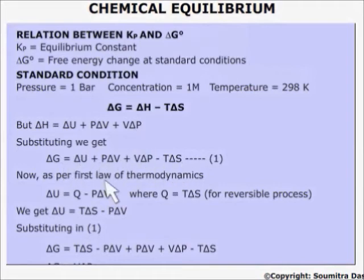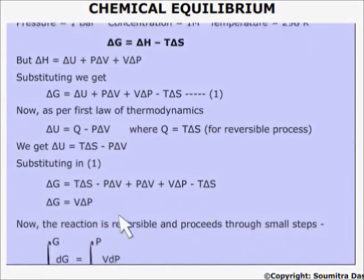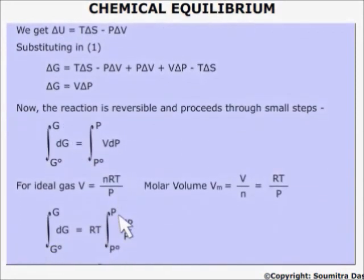Now from the first law, we know that ΔU, the internal energy change, is equal to Q minus PΔV. Now when the process is reversible, then Q equals TΔS. This gives ΔU equal to TΔS minus PΔV. Substituting the value of ΔU in this equation we get ΔG equal to VdP.